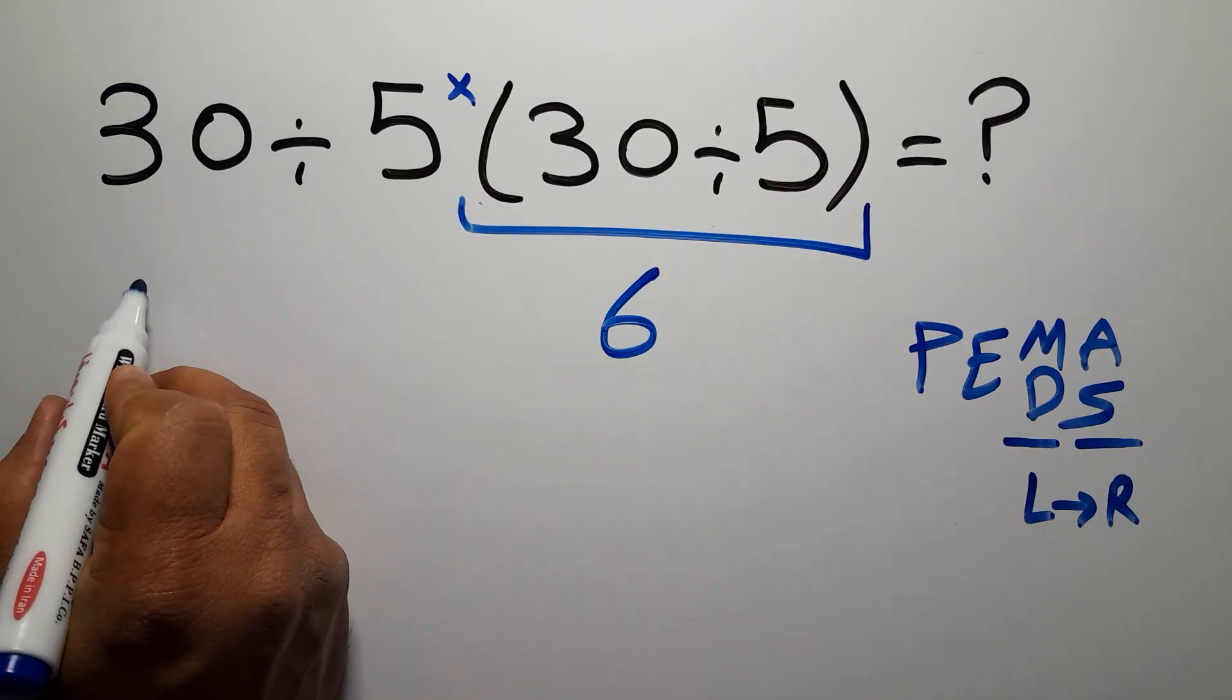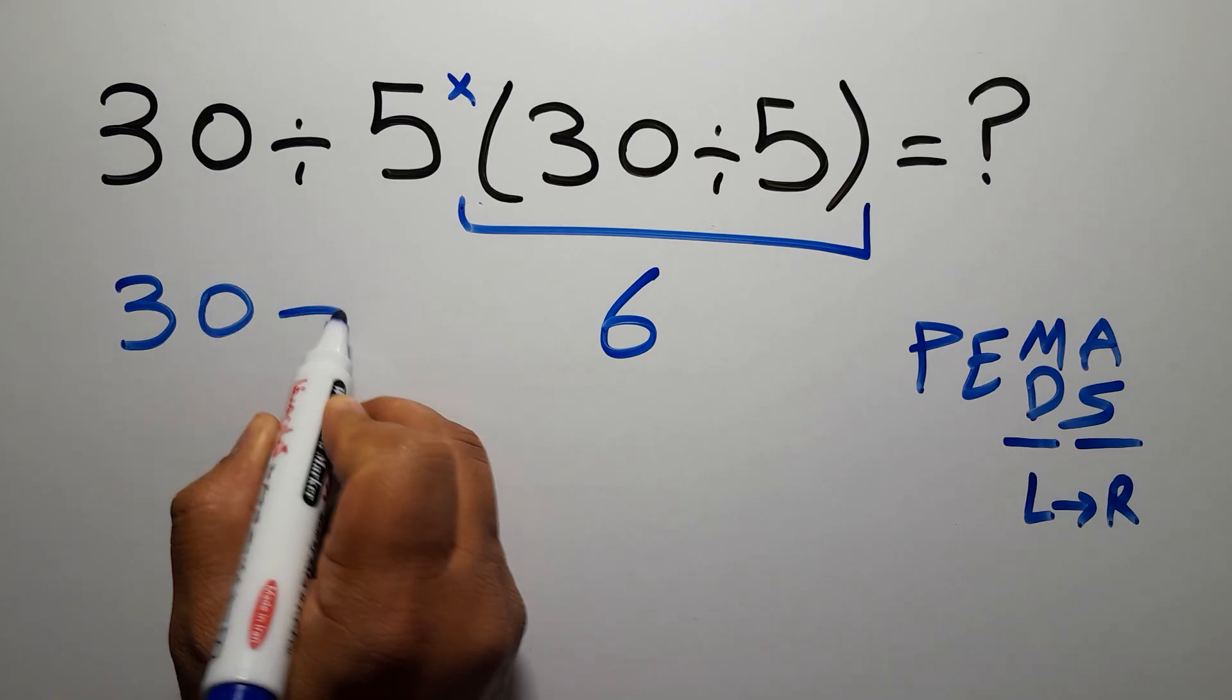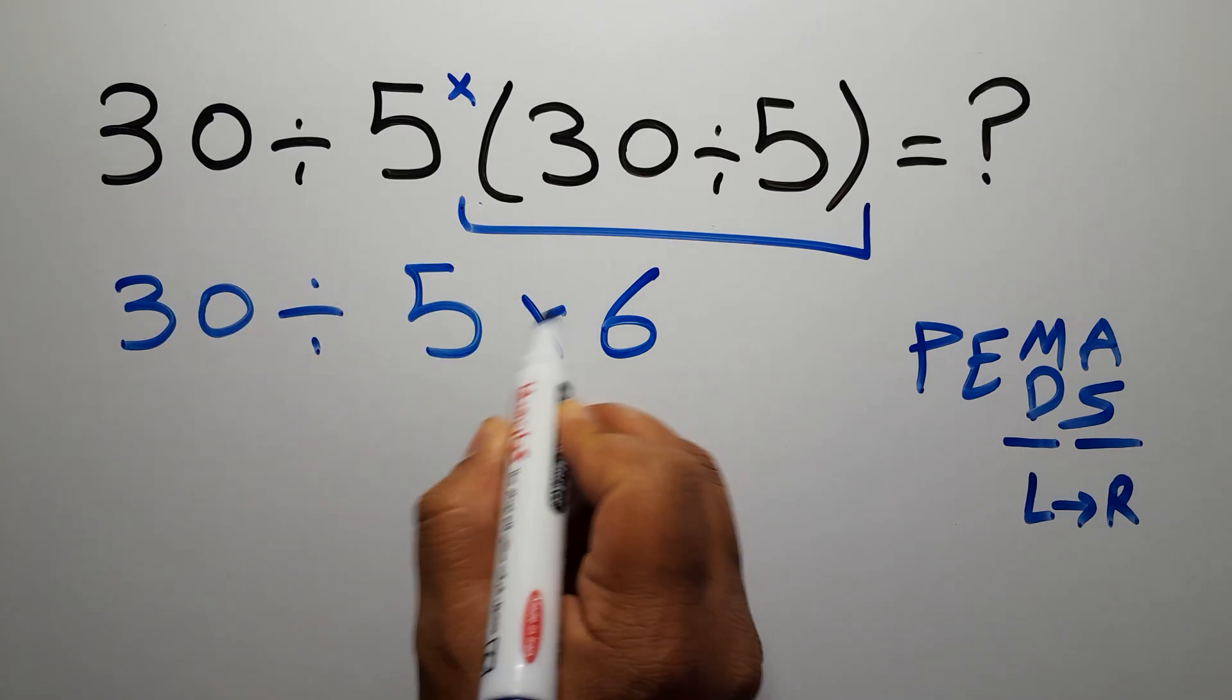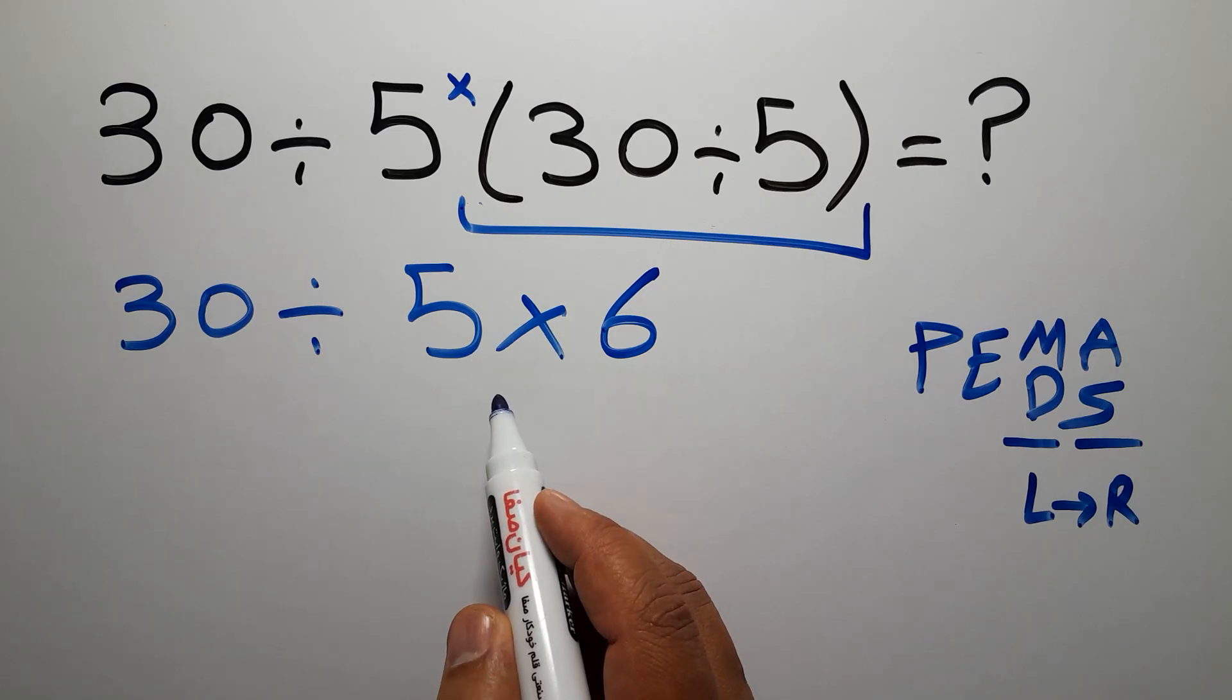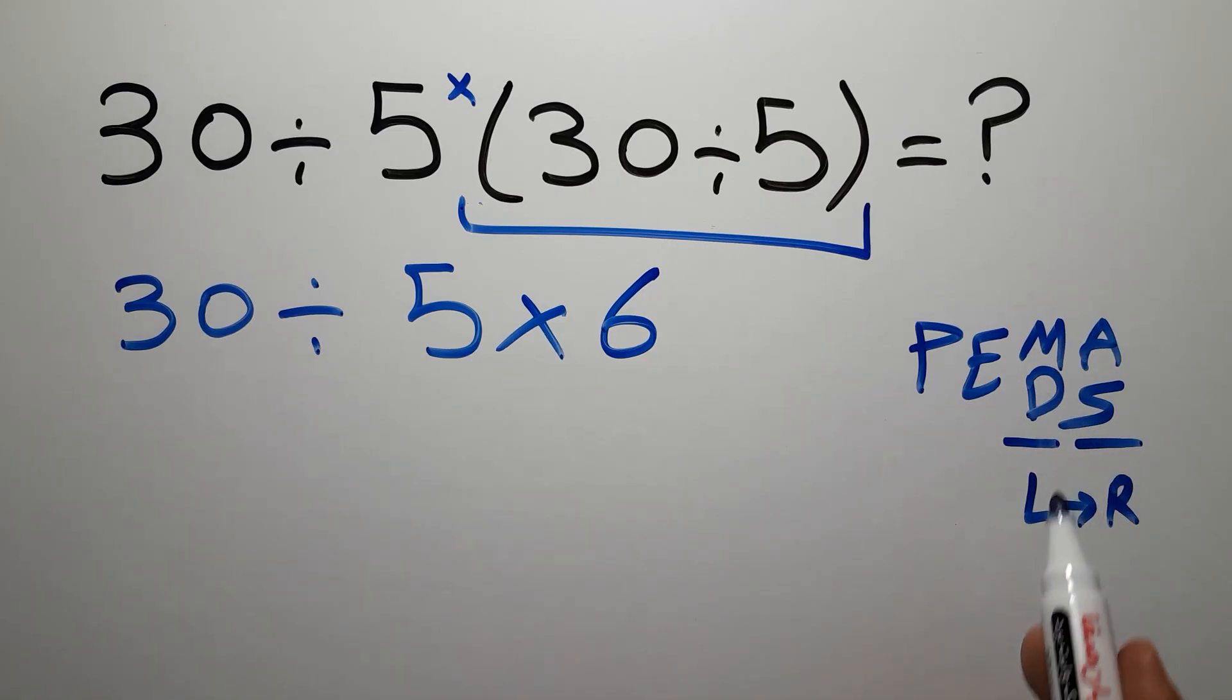So we have 30 divided by 5 then times 6. Now we have one division and one multiplication. As I said, multiplication and division have equal priority and we have to work from left to right, so now we have to do this division, not this multiplication.